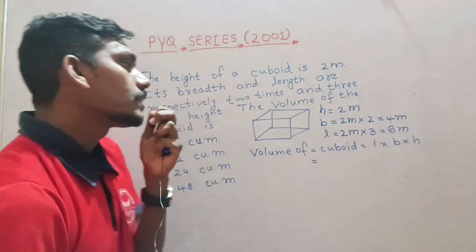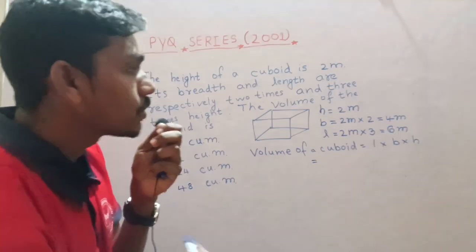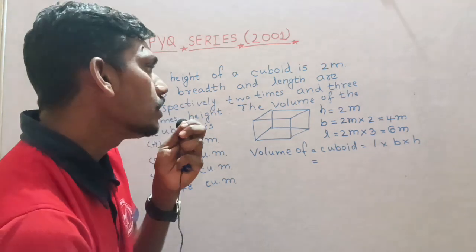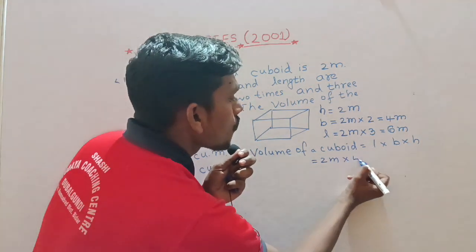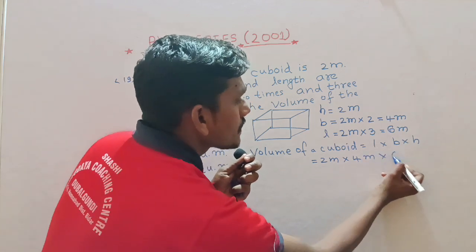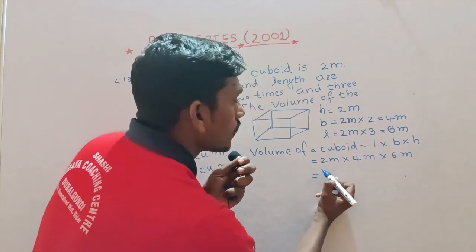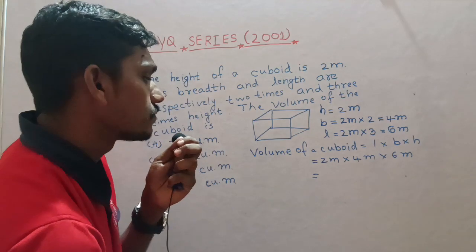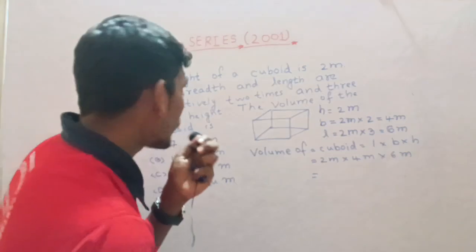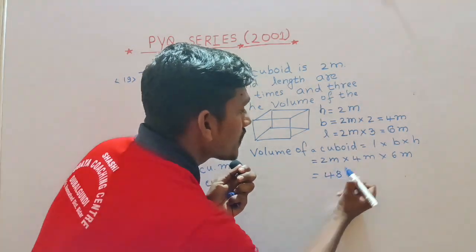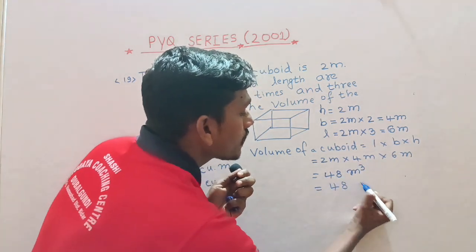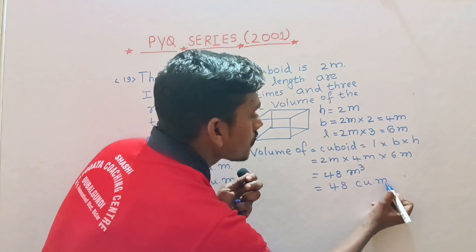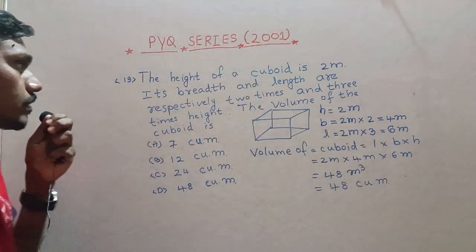The length is given, the breadth is given, and the height is given. Simply multiply 2m into 4m into 6m. This is 2 fours is 8, 8 sixes is 48. Meter into meter into meter is meter cube. That is 48 cubic meters value.